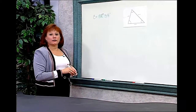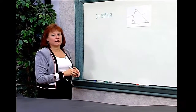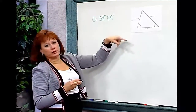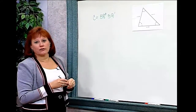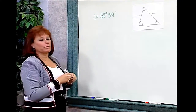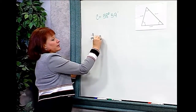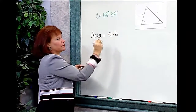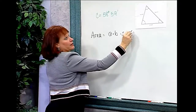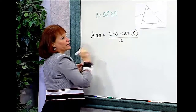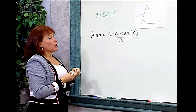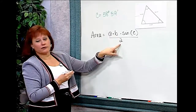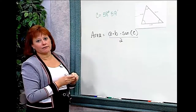Usually, when you want to find the area of a triangle, you take one-half the height times the base — but that assumes you know the height. In this case, I don't know the altitude to the base, so I have to rely on the area formula for oblique triangles. The formula is: Area equals A times B times the sine of the included angle C, all divided by 2. This is similar to the standard formula, but I must remember to multiply by the sine of the included angle.